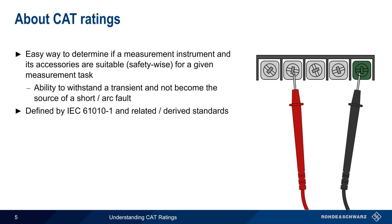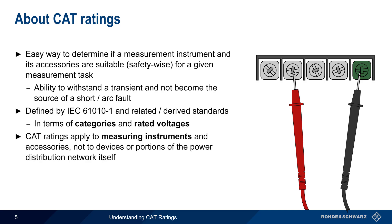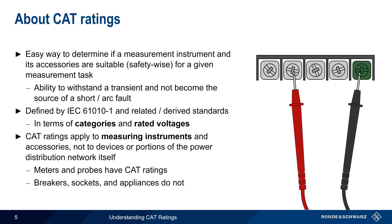CAT ratings are defined by IEC 61010-1 and other related or derived standards. It's very important to remember that CAT ratings apply to measuring instruments and their accessories, not to devices connected to the power distribution network or parts of the distribution network itself. Meters and probes have CAT ratings, but things like breakers, sockets, and appliances do not.